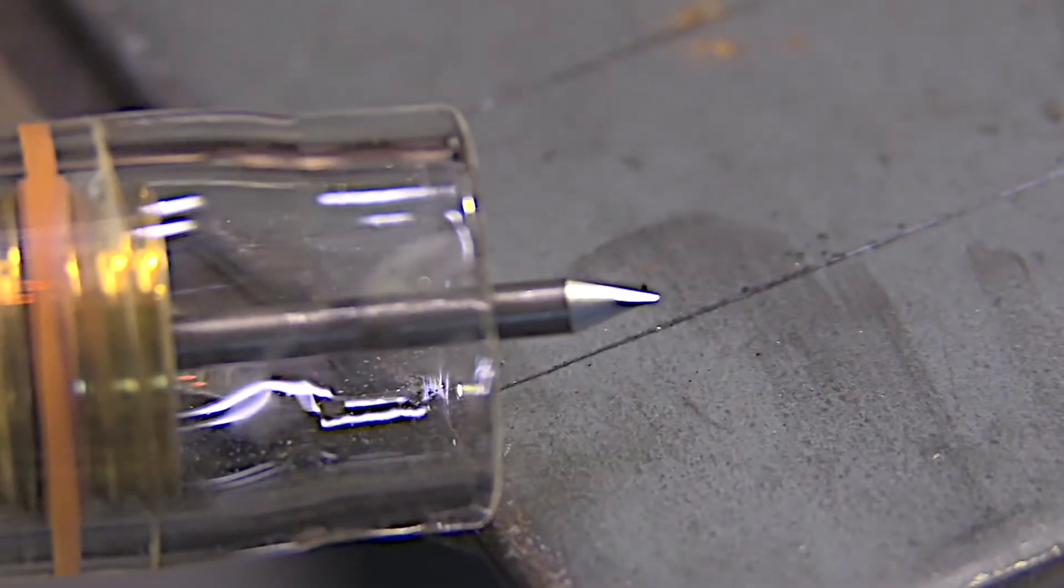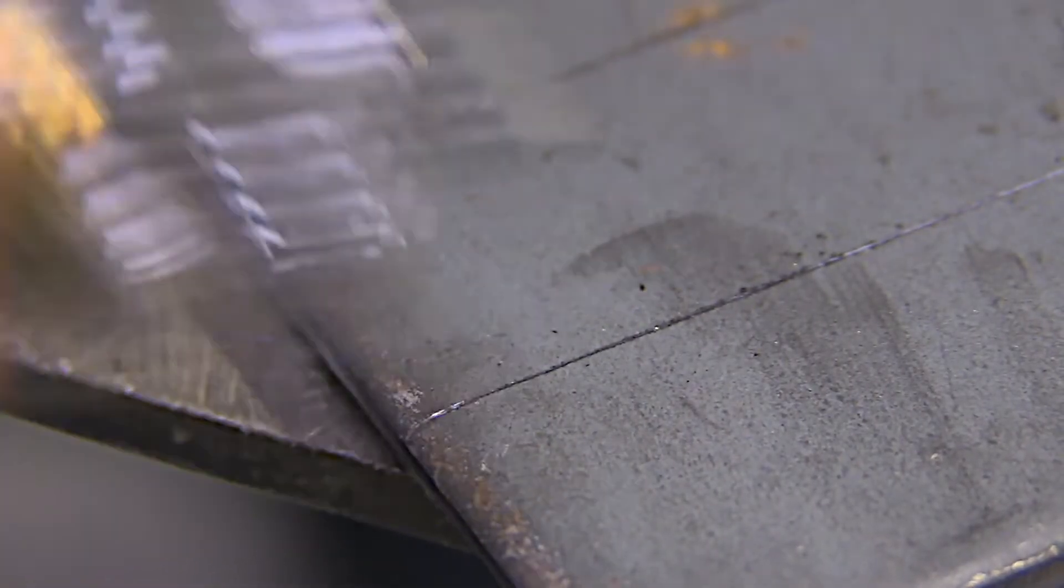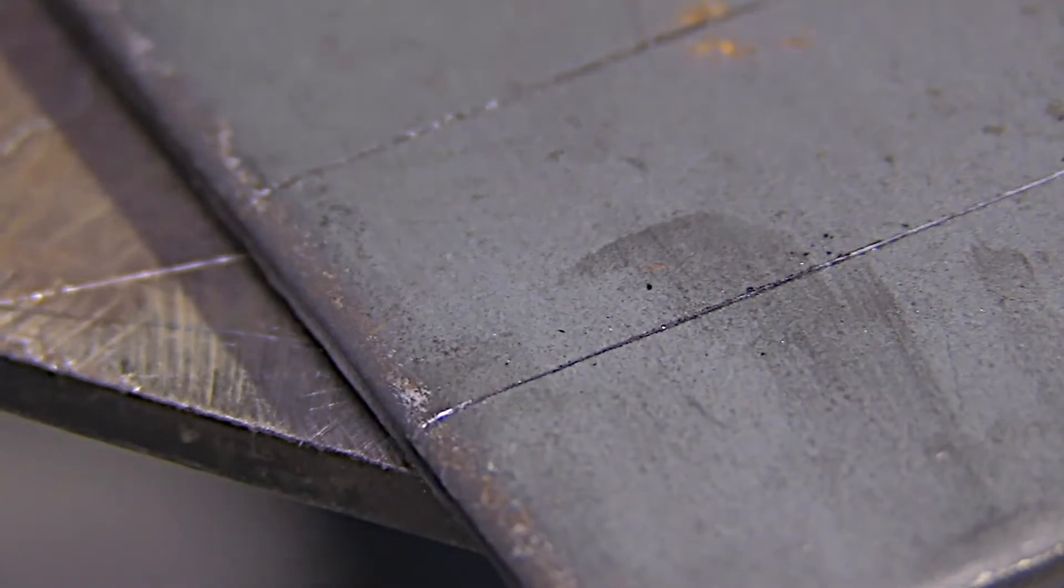All right let's take a look at some common TIG mistakes now. One of the most common is just not cleaning the metal. A lot of people that think they have a welding problem really just have a prep problem. You got to clean the mill scale off of hot rolled steel in order to get a good TIG weld, a good-looking TIG weld.